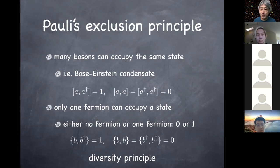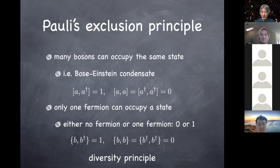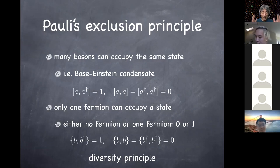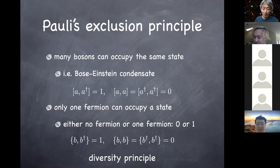I'd actually like to rename Pauli's exclusion principle the 'diversity principle.' Different fermions want to be as diverse as possible — they never occupy the same state; they want to occupy different states from each other. I believe calling it the diversity principle makes better sense than exclusion principle. We are not an exclusive club; we are inclusive.